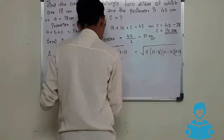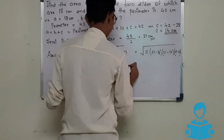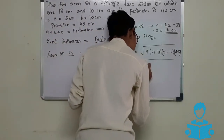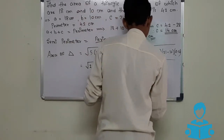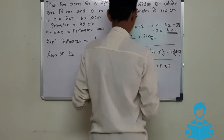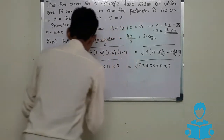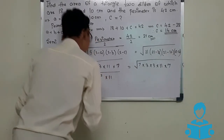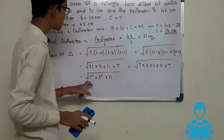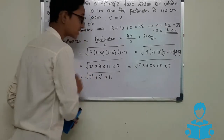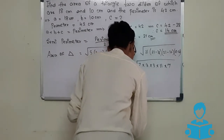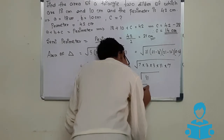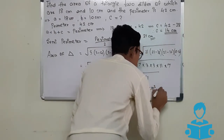After solving: under root of 21 multiplied by 3 multiplied by 11 multiplied by 7. Now we factorize: 21 can be written as 7 multiplied by 3, so we get under root of 7 squared multiplied by 3 squared multiplied by 11. Taking 7 and 3 out of the root, we get 7 multiplied by 3 multiplied by under root 11, which gives the answer 21 under root 11 centimeter square. This is the area of the triangle.